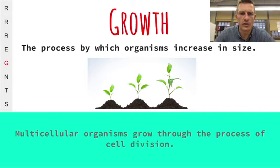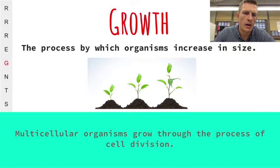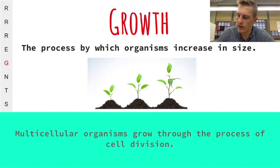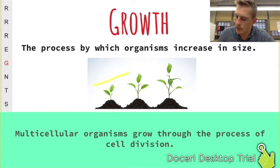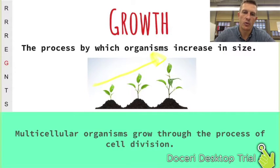Growth is a simple one — all living things are able to grow. Multicellular organisms grow through the process of cell division. A plant isn't increasing in size because its cells get bigger; it's increasing in size by obtaining more cells through division.